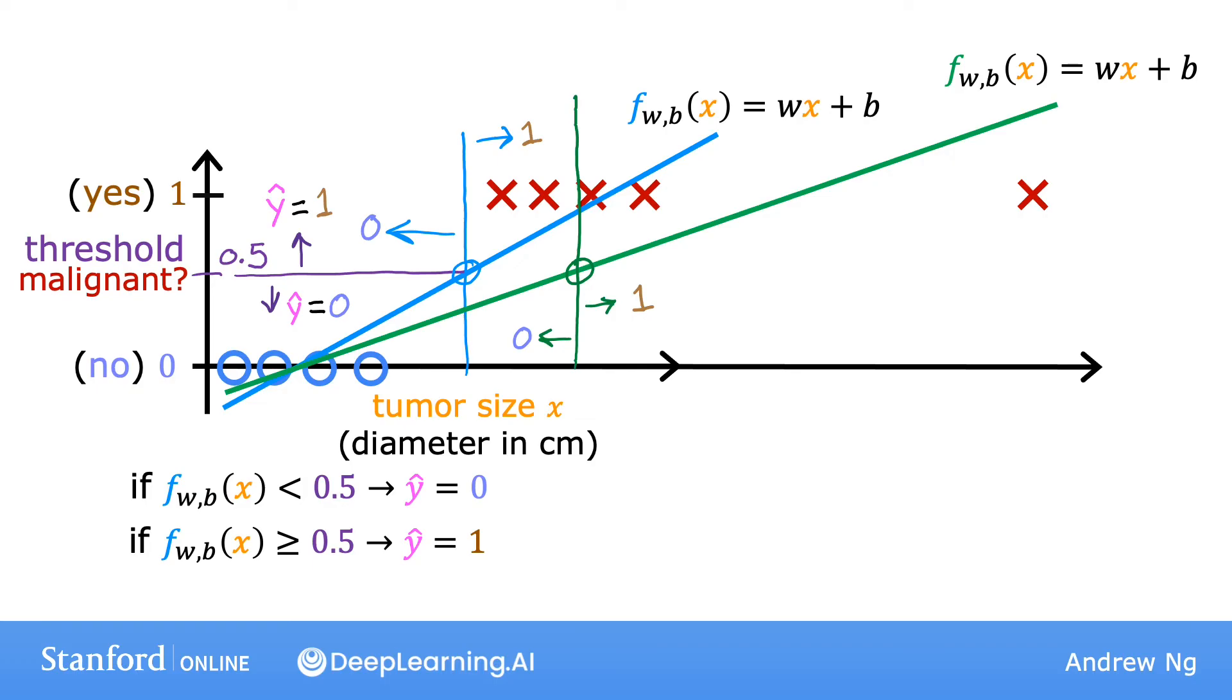This isn't what we want, because adding that example way to the right shouldn't change any of our conclusions about how to classify malignant versus benign tumors. But if you try to do this with linear regression, adding this one example, which feels like it shouldn't be changing anything, it ends up with us learning a much worse function for this classification problem. Clearly, when a tumor is large, we want the algorithm to classify it as malignant. So, what we just saw was linear regression causes the best-fit line, when we added one more example to the right, to shift over, and thus the dividing line, also called the decision boundary, to shift over to the right. You'll learn more about the decision boundary in the next video. You'll also learn about an algorithm called logistic regression, where the output value of the outcome will always be between 0 and 1, and the algorithm will avoid these problems that we're seeing on the slide.